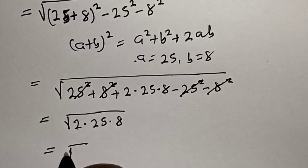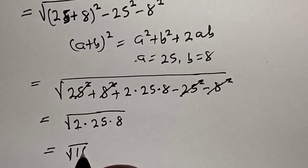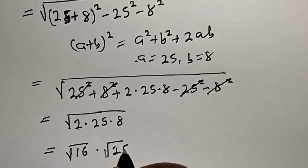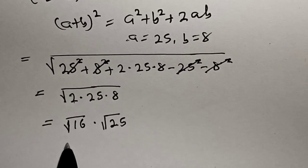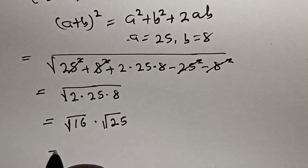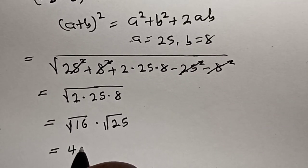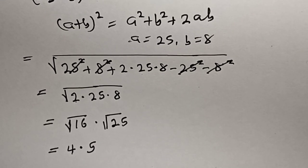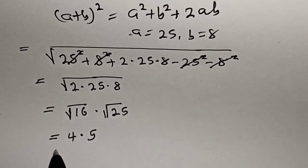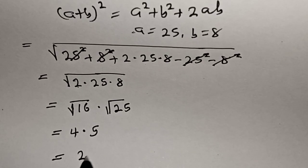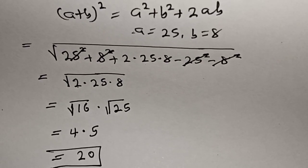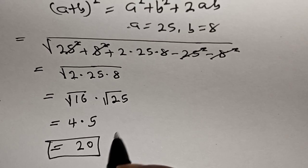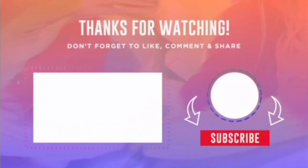Square root of 16 multiplied by square root of 25. The square root of 16 is 4, multiplied by the square root of 25 which is 5. And 4 times 5 is equal to 20. This is our final answer. Please like, share, comment and subscribe. Thank you, bye bye.